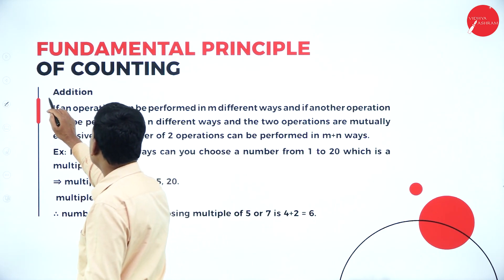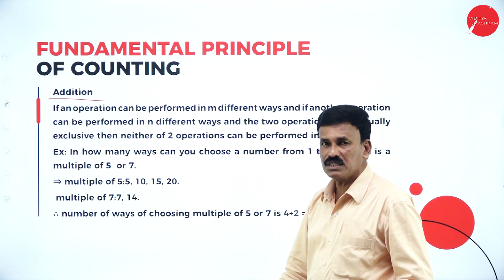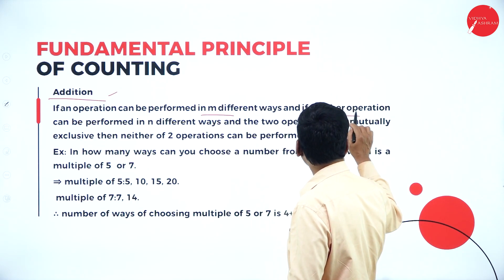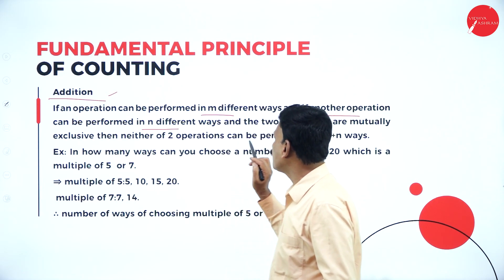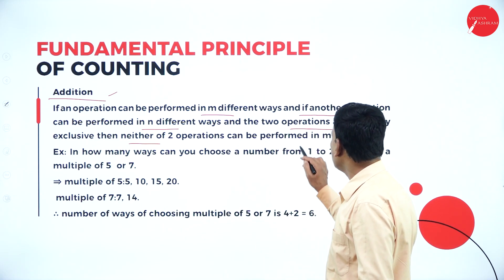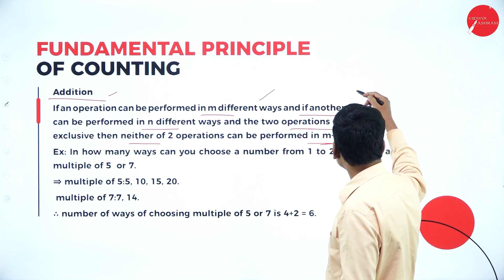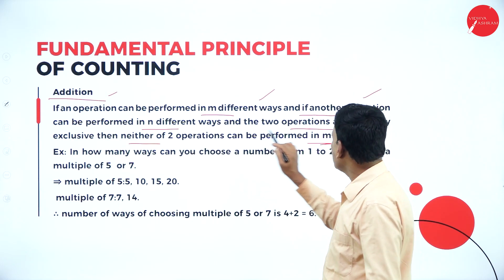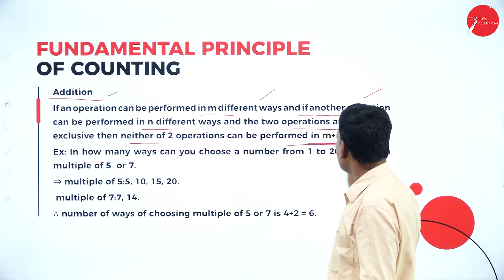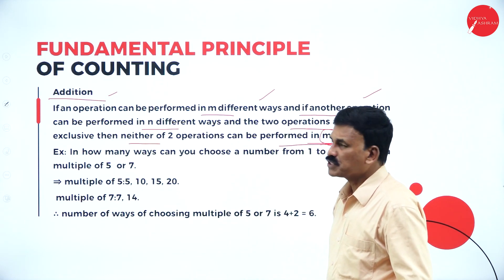Now let us come to the next concept: the fundamental principle of addition in counting. This says: if one operation can be performed in M different ways and another operation can be performed in N different ways, and the two operations are mutually exclusive, then either of the two operations can be performed in M plus N ways.